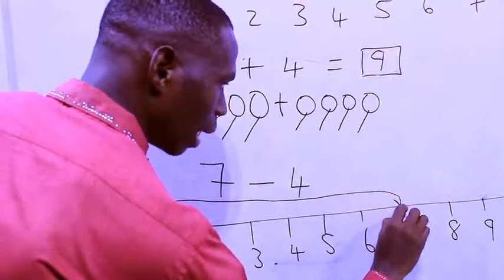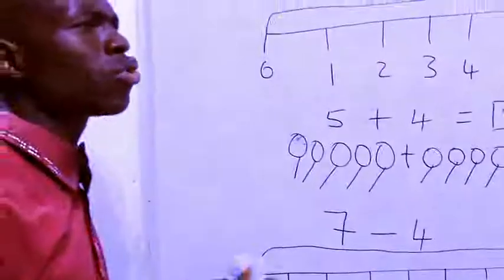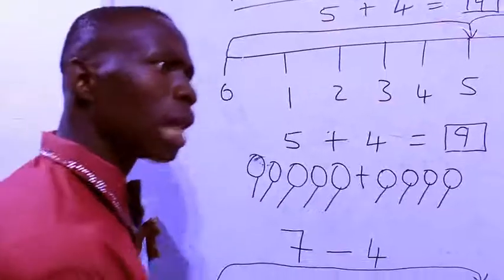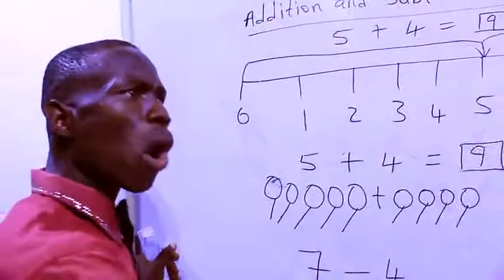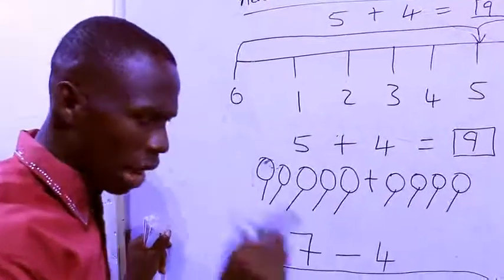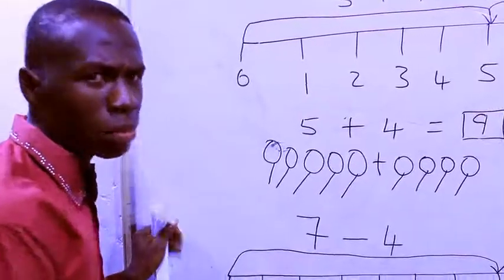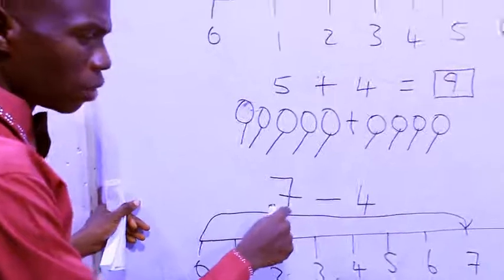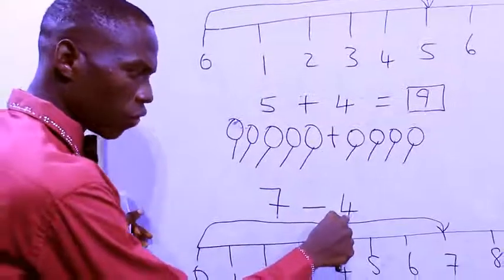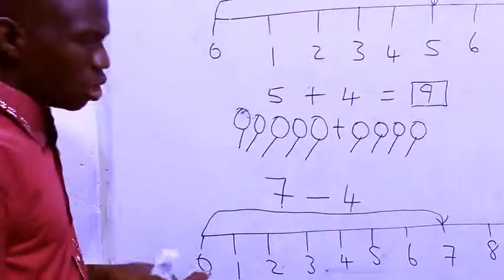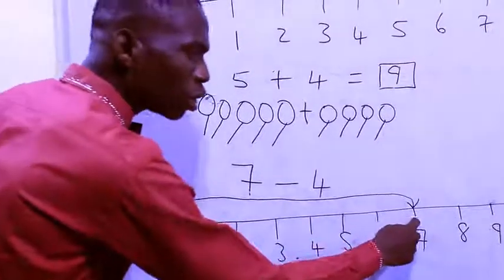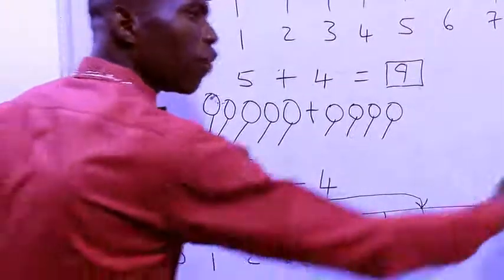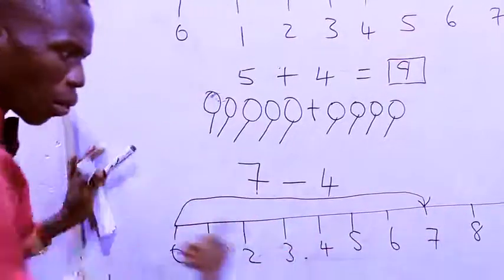This is where seven is. Minus means remove — when you are removing, you will be going backwards. It is only minus where you can go backward. In addition: forward ever, backward never. In subtraction, backward is allowed. So if you want to subtract four from seven — seven minus four — start from seven and count backward. If you are adding, you count forward; if you are minusing, you count backward.